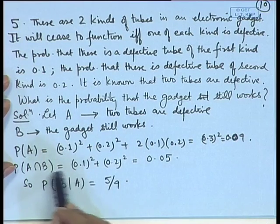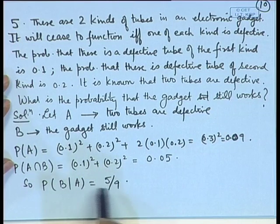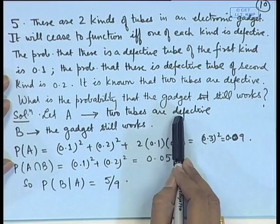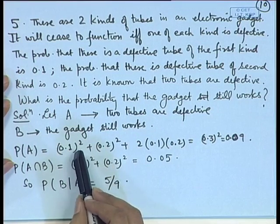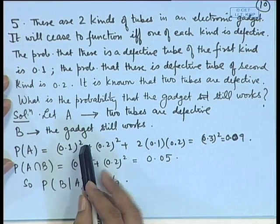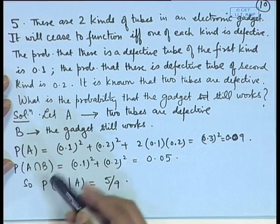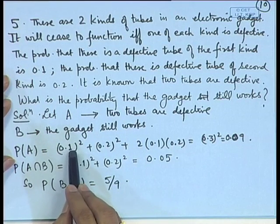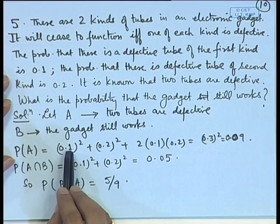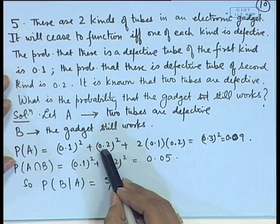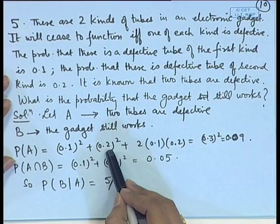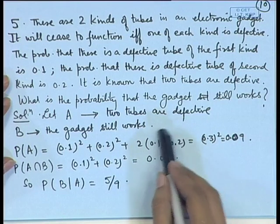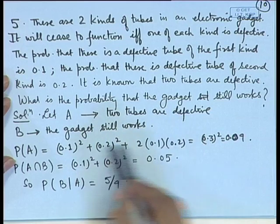Let A be the event that two tubes are defective, and B the event that the gadget still works. We are interested in the conditional probability B given A. For probability of A, we can have four possibilities, making use of independence of individual tubes. If both defective tubes are of the first kind, probability is 0.1 × 0.1 = 0.1². Both could be second kind: 0.2². Or one of each: 2 × 0.1 × 0.2. After simplification, probability of A is 0.09.